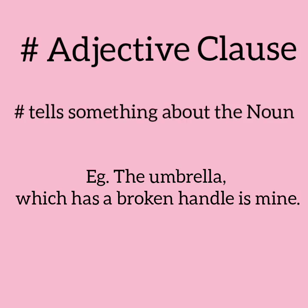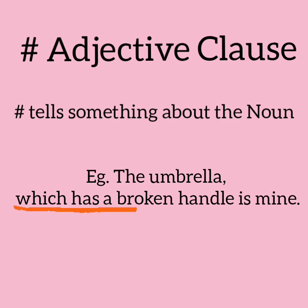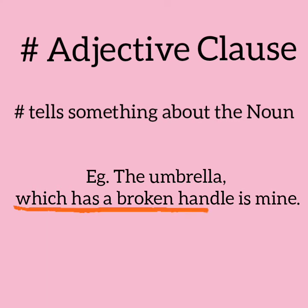For example: 'The umbrella which has a broken handle is mine.' Here, the words 'which has a broken handle' are the adjective clause and they modify or tell us about the noun 'umbrella.'